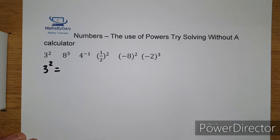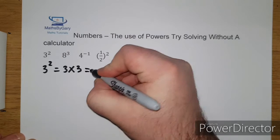So the first problem I have is 3 squared. So what do we mean by 3 squared? 3 squared is simply 3 multiplied by 3. So 3 times 3 equals 9.